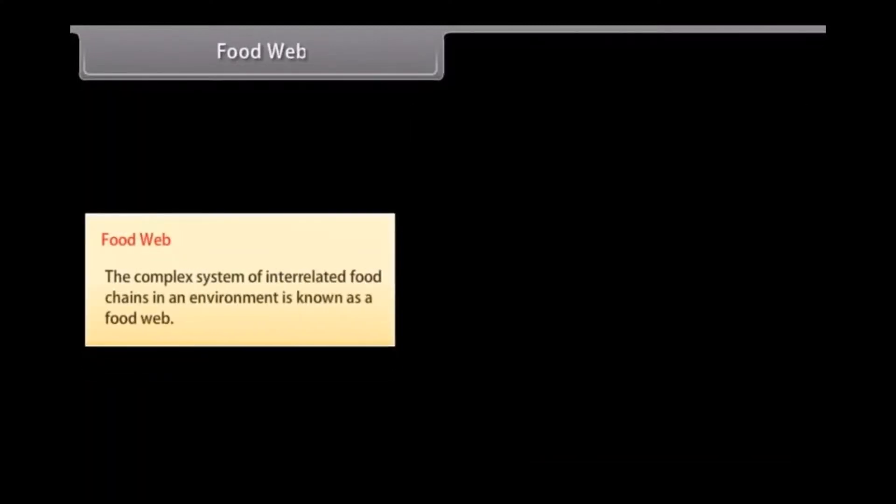Food Web. The complex system of interrelated food chains in an environment is known as food web.